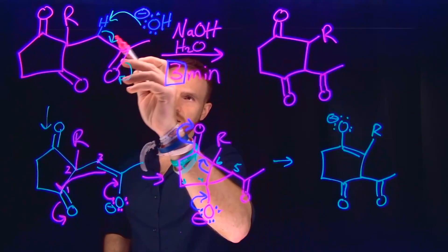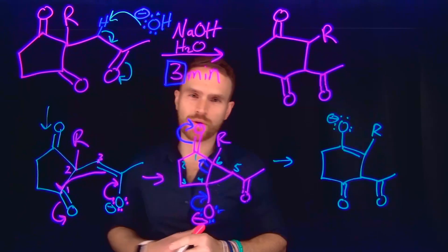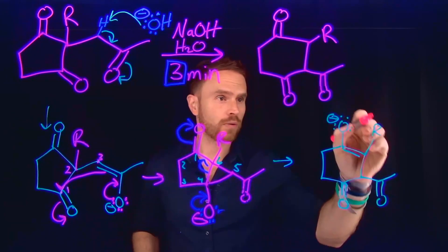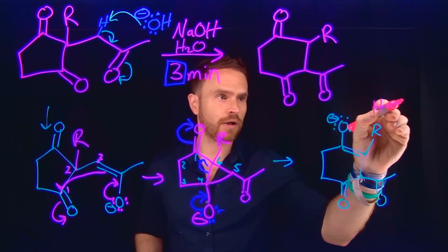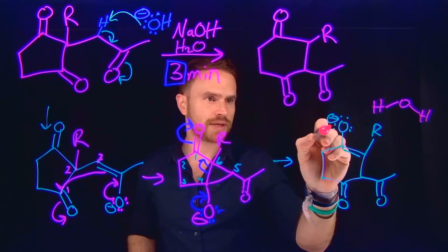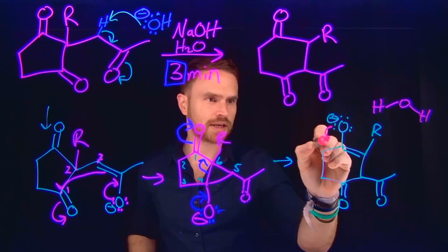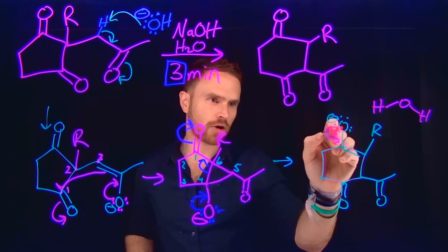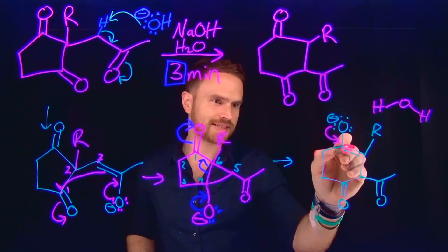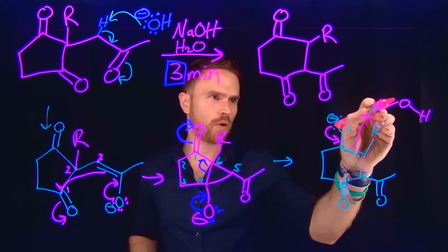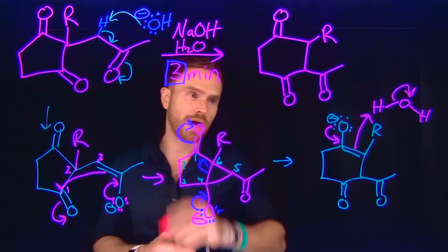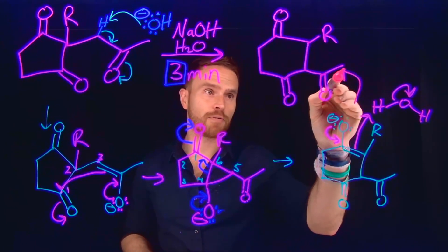Remember, in our very first step, we took hydroxide and deprotonated this alpha carbon hydrogen, thus forming water. Which means there is water — in addition to there being water as a reactant — located here, where these electrons can come back down, reforming our carbonyl ketone. Then these pi electrons in this alkene will come and deprotonate water, thus reforming our sodium hydroxide and giving us our final product.